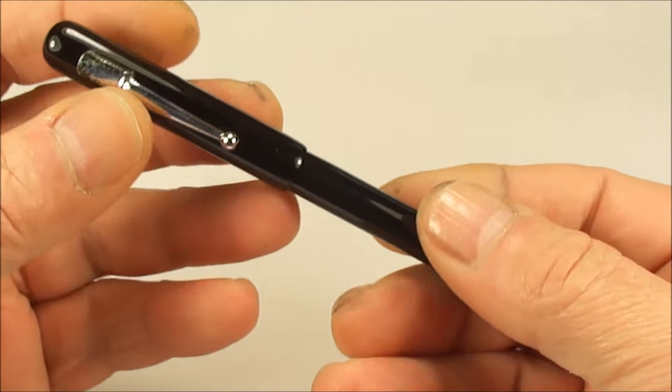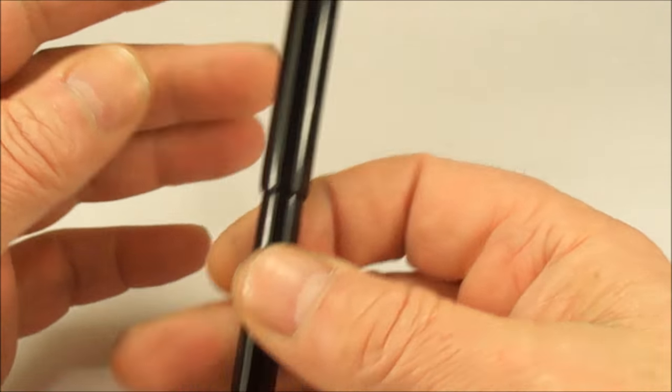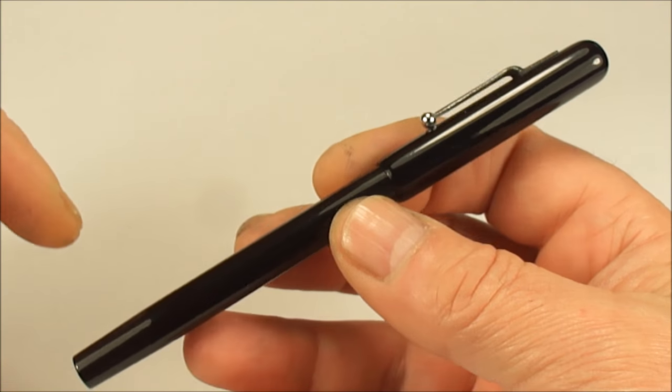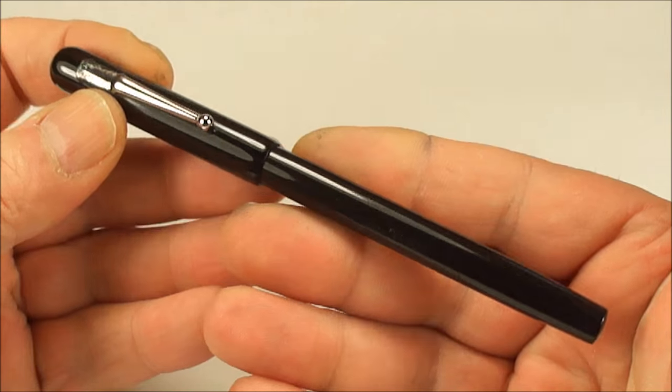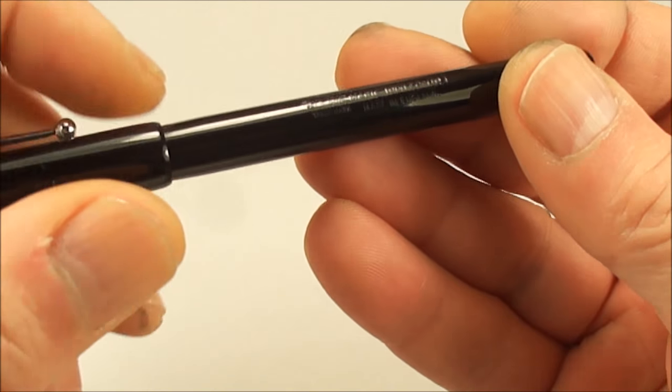Apart from that, there's no other markings. You notice there's no levers because simply this is what we term as an eyedropper fountain pen, which we'll show you in a moment.